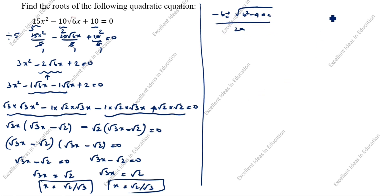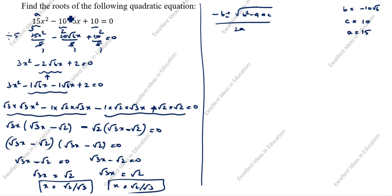First let's identify the values. b equals minus 10√6, c equals 10, and a equals 15. Recall the standard form ax² plus bx plus c equals 0, so we can now substitute a, b, and c into the formula.